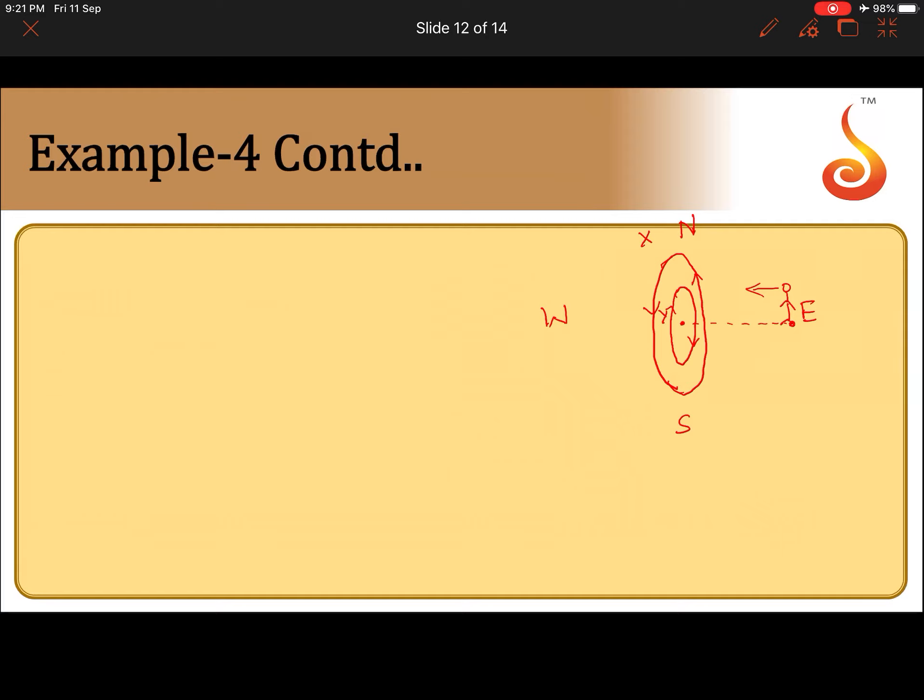This is how it is. So current in X is 16 ampere, it has 20 turns. Current in Y is 18 ampere, it has 25 turns. Now find the field at the center.